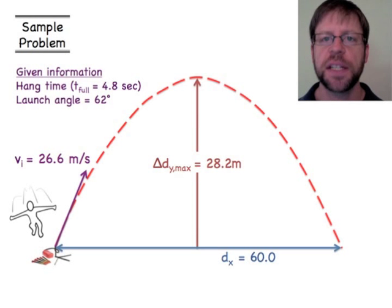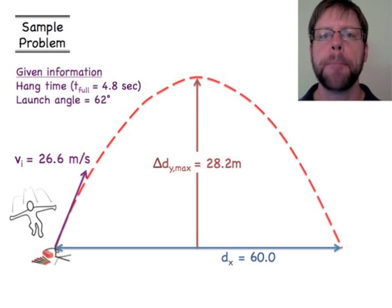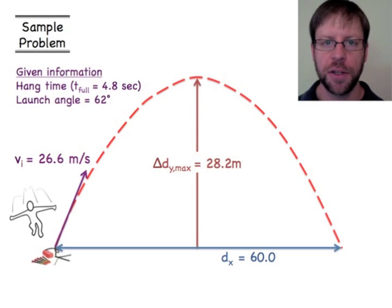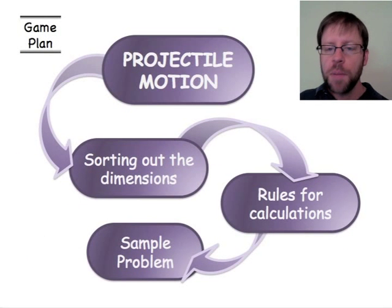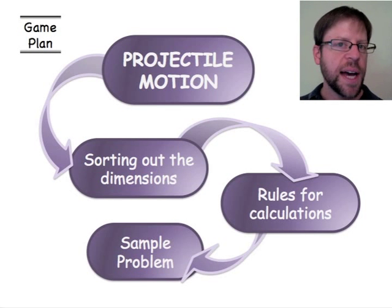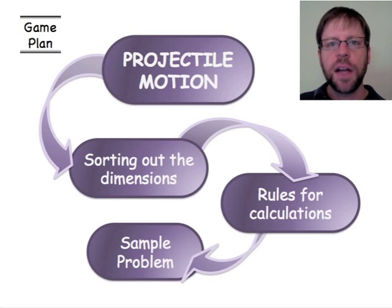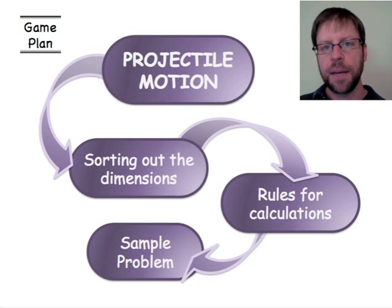To summarize: the initial launch velocity is 26.6 m/s, the maximum height is 28.2 meters, and the range is 60.0 meters. Remember, these strategies apply when the launch height equals the landing height. I'll do a separate standalone video for situations where the launch and landing heights differ. If you think you understand what's going on, let your computer know.